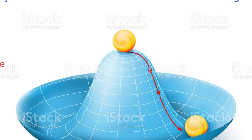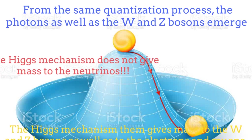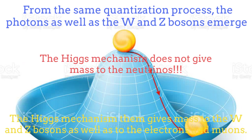What we mean from the previous explanation is that from the same electroweak theory, the Z bosons, the W bosons, as well as the photons emerge. Although the Higgs mechanism gives mass to the Z and W bosons as well as to the electron and muon inside the same theory, still it doesn't give mass to the neutrinos.